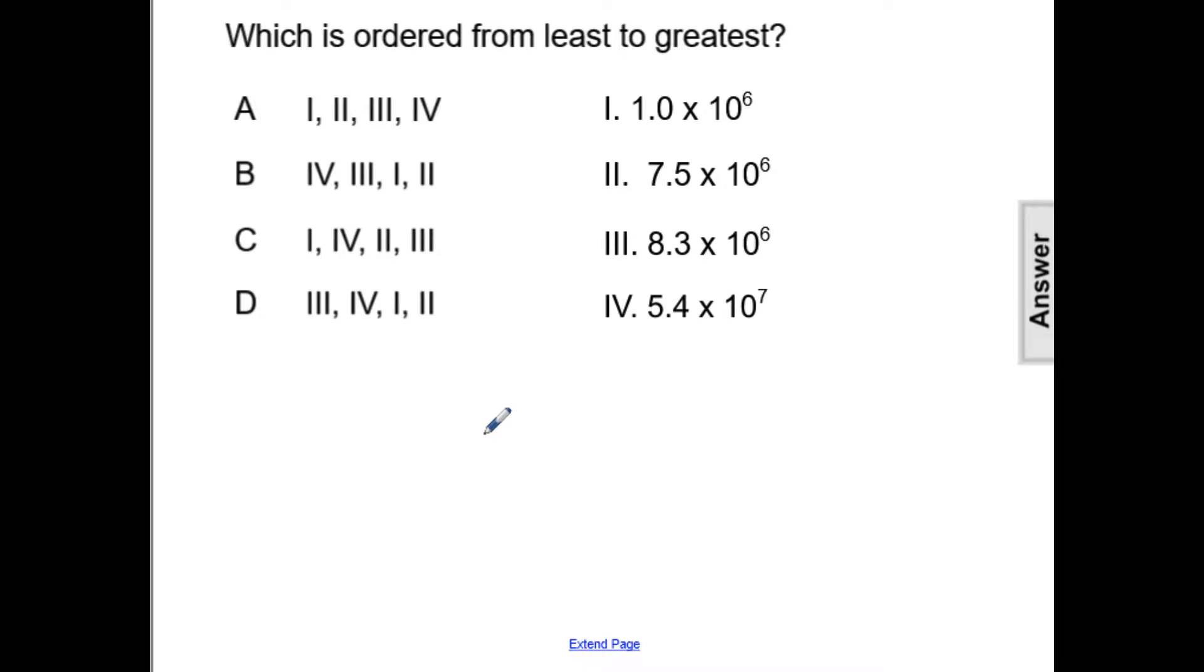Which is ordered from least to greatest? So here we have four different numbers written in scientific notation. When comparing numbers in scientific notation, we first are going to compare the exponents and then look at the coefficients.